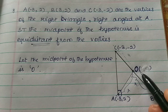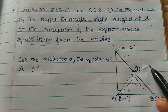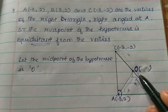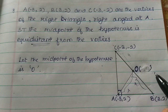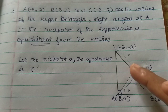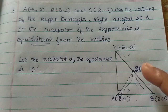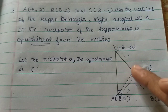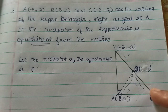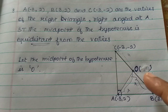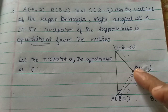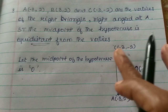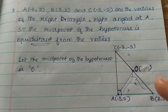Let the midpoint of the hypotenuse be O. BC is the hypotenuse, so O is the midpoint of BC. We will use the midpoint formula to find the coordinates, then show that OA, OB, and OC distances are equal.